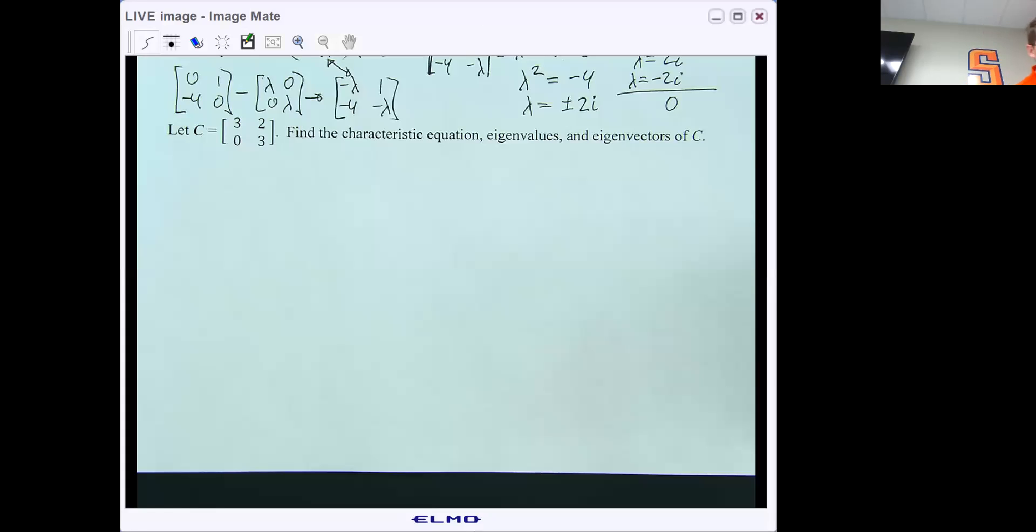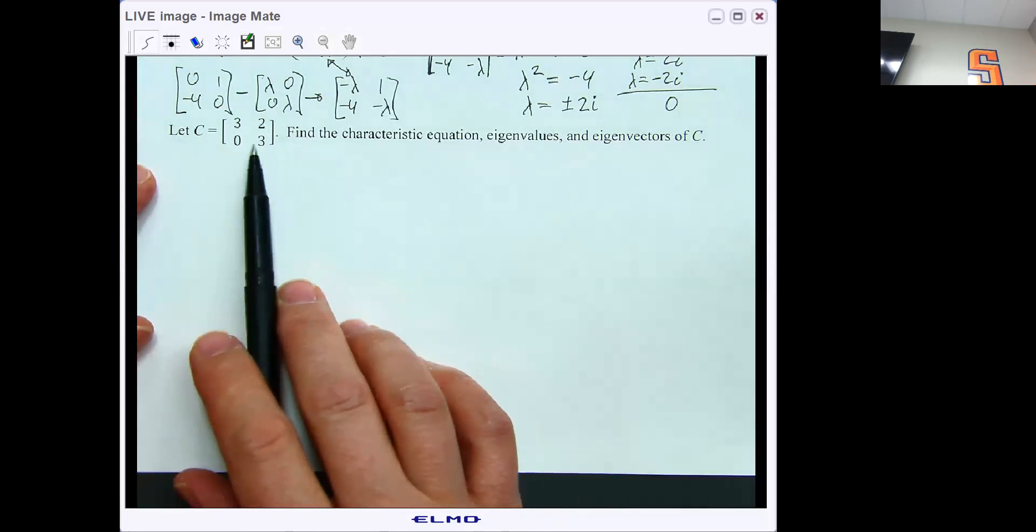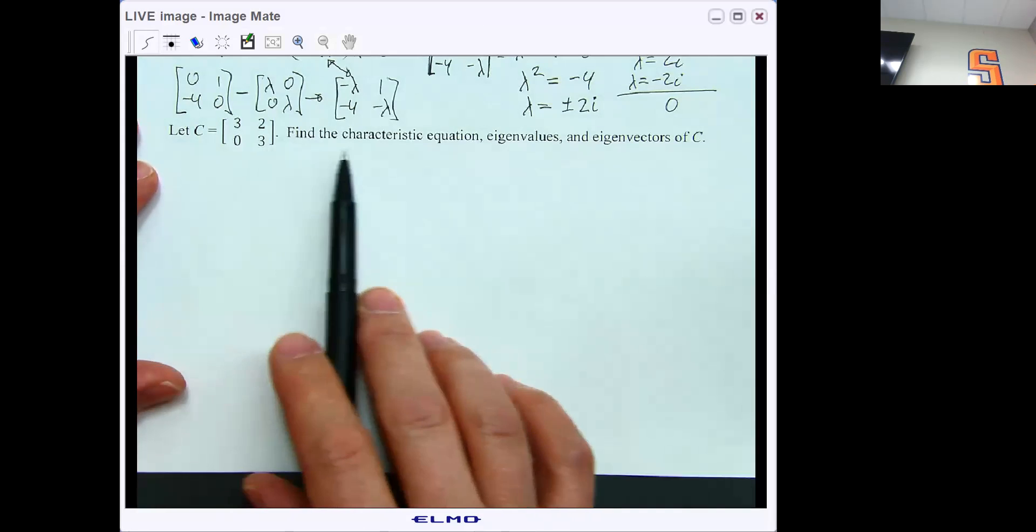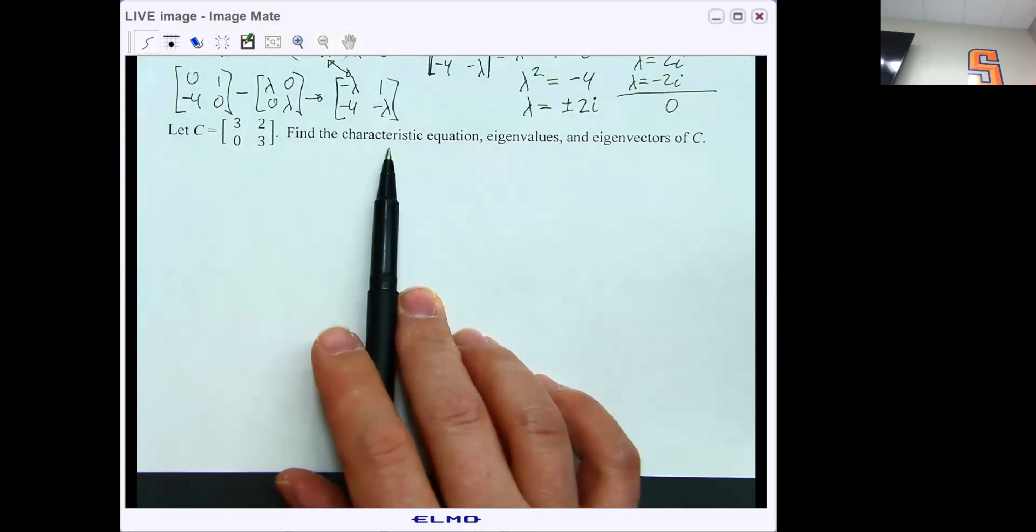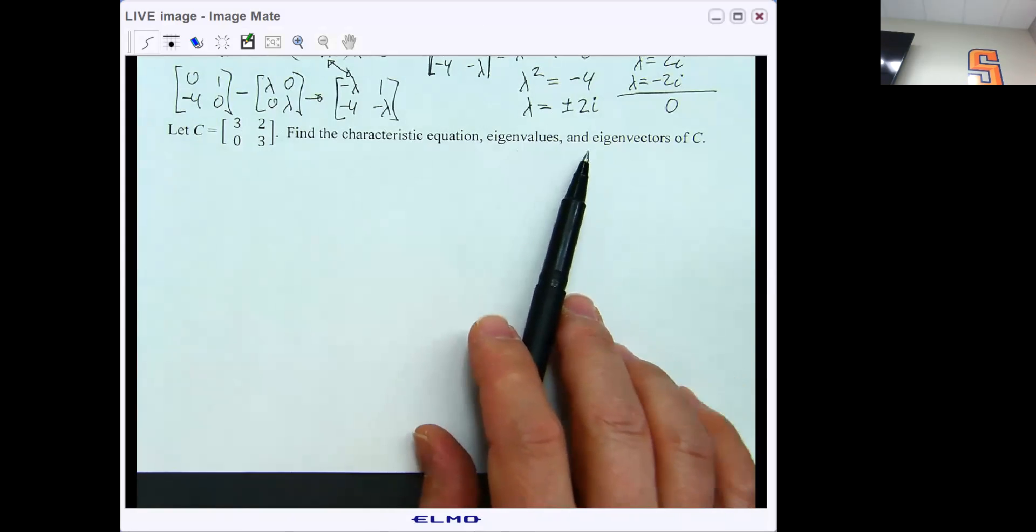Let's work another example together and see what we get. So if C equals the 2 by 2 matrix [3, 2; 0, 3], find the characteristic equation, eigenvalues, and the corresponding eigenvectors for matrix C.